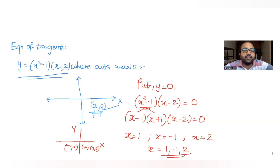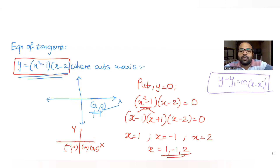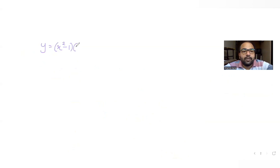These are the three points where the curve intersects the x-axis. Now we need to find the equations of tangents at all three points. We know the coordinates, and we also need the slopes of the tangents. Once we have the slope and the coordinates, we can apply y minus y1 equals m times x minus x1 to get the equations.